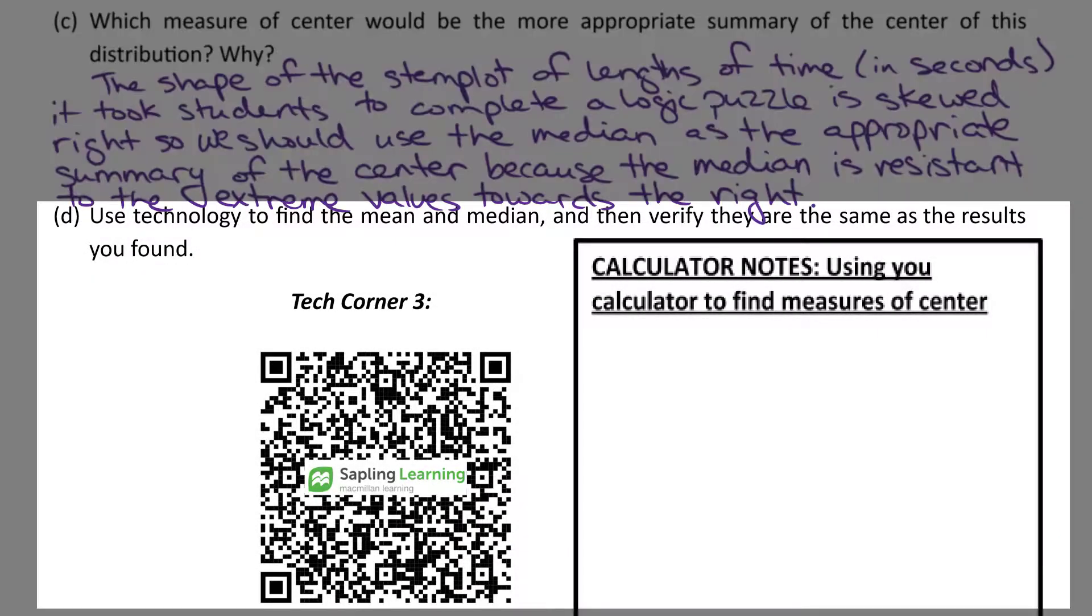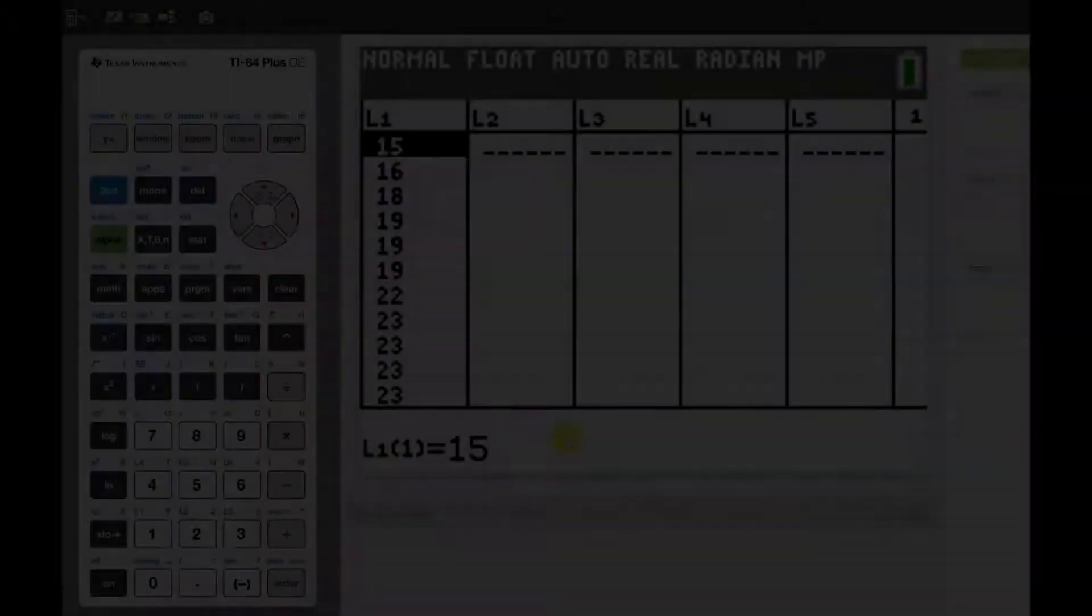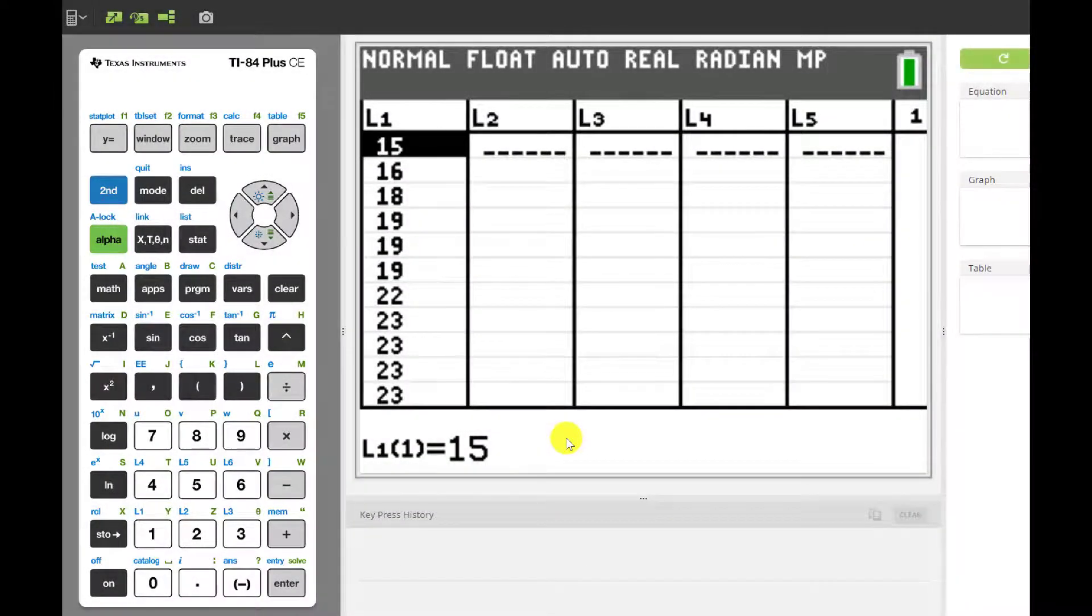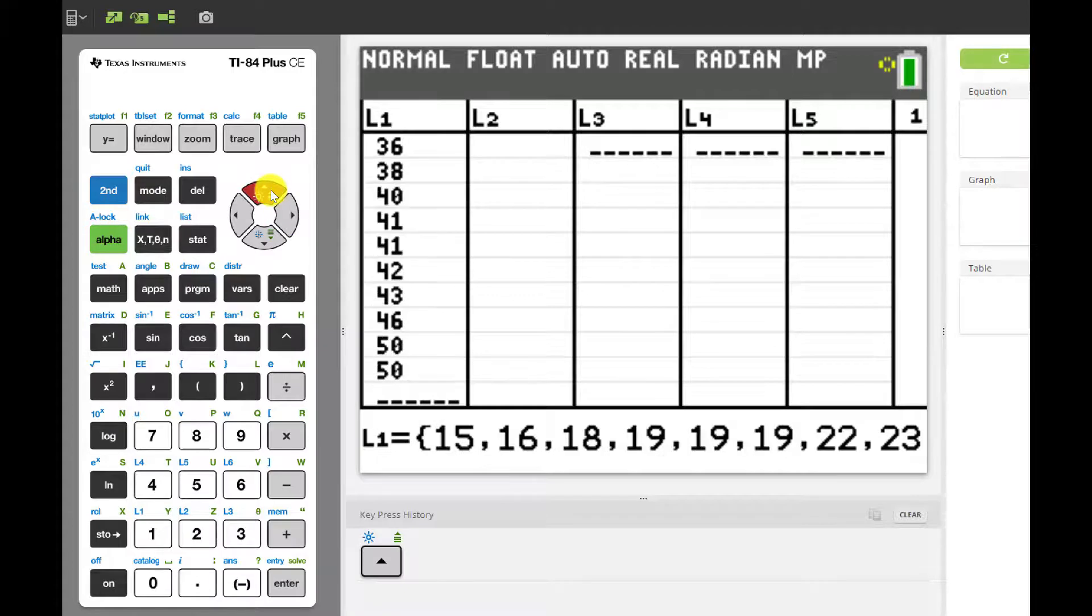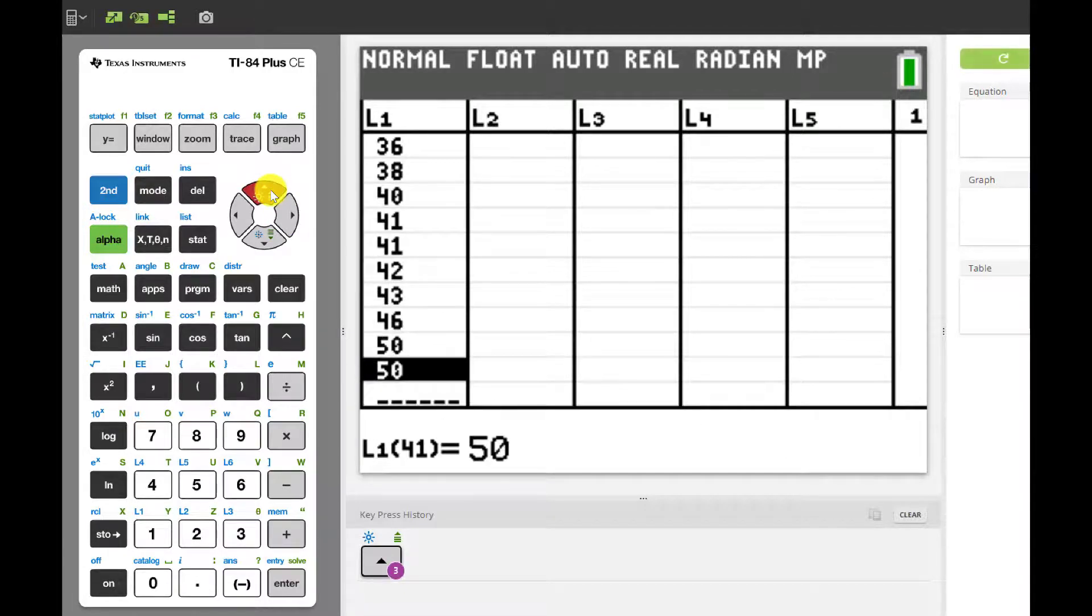Now we're going to get into part D. Part D is asking us to use technology to find the mean and median and then verify they are the same as the results you found. So what we're looking at is we want to double check is the mean really larger than the median like we had said in part A. So take a minute and pause the video if you still need to get your data entered. I have all the data entered in list 1. It's 41 data values. That was a lot to enter.